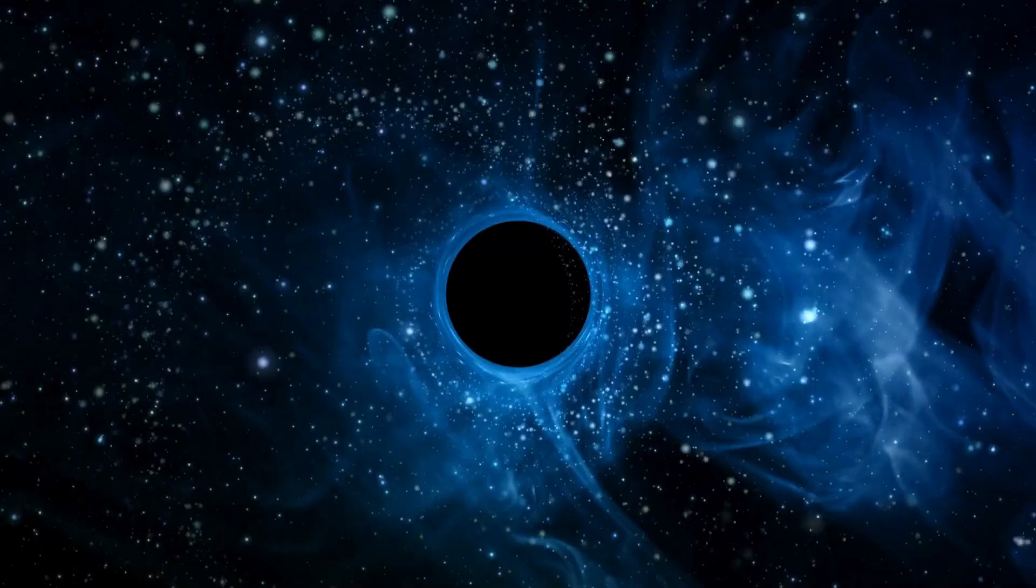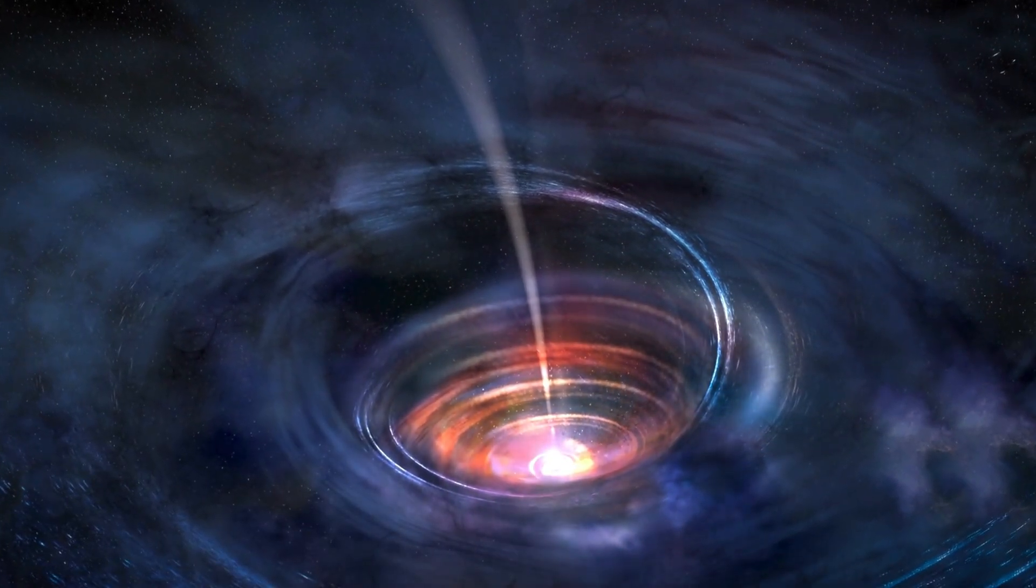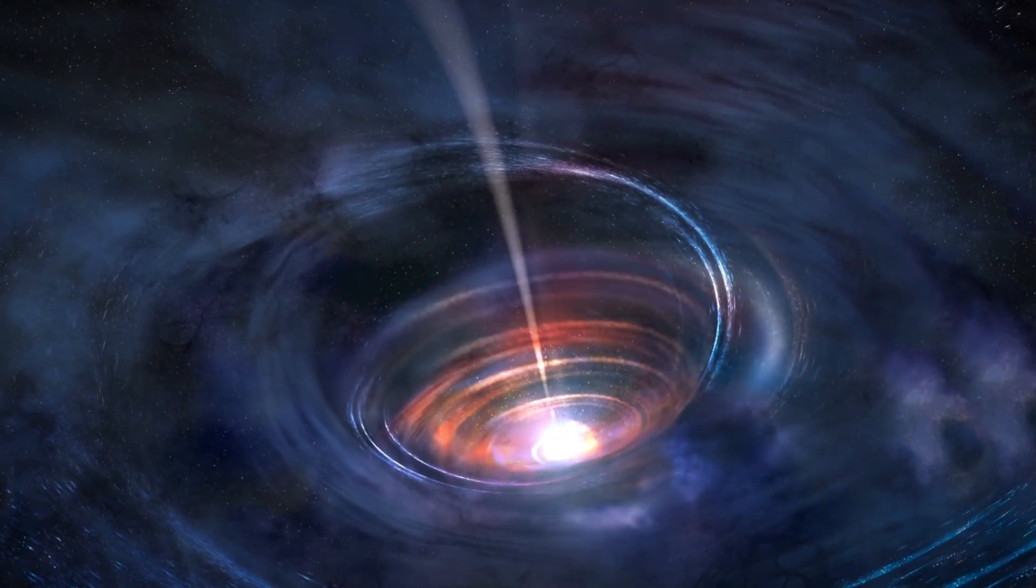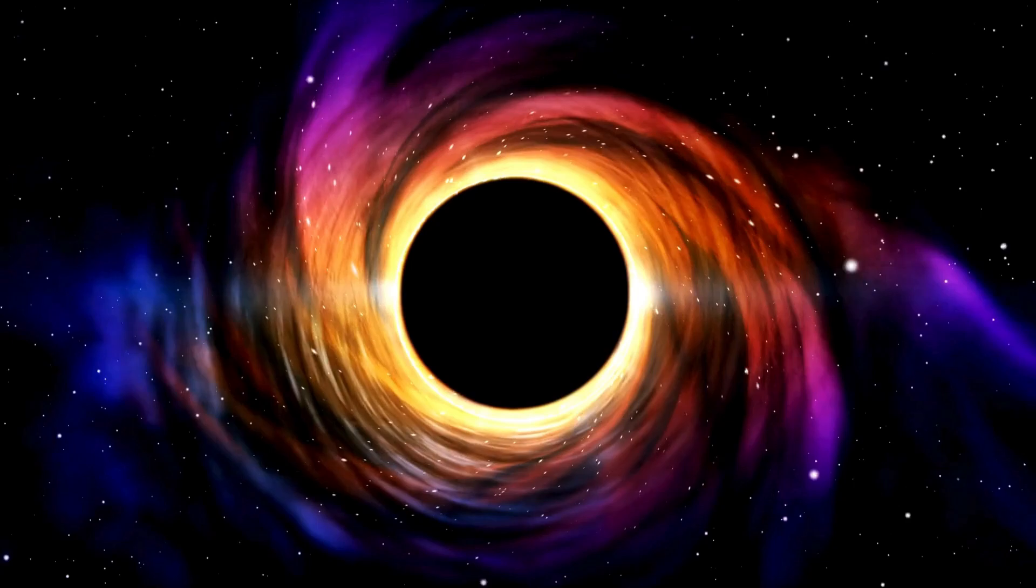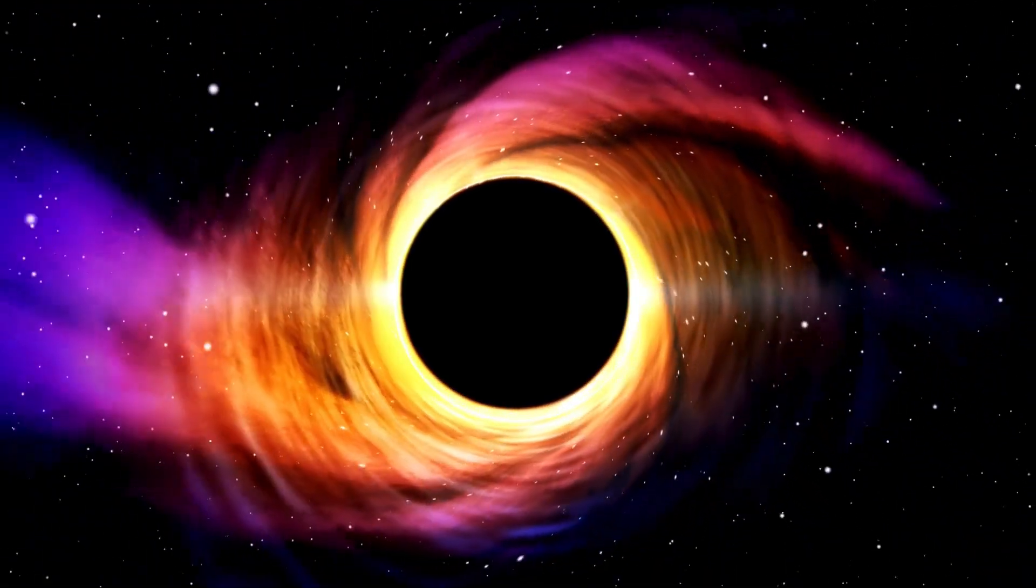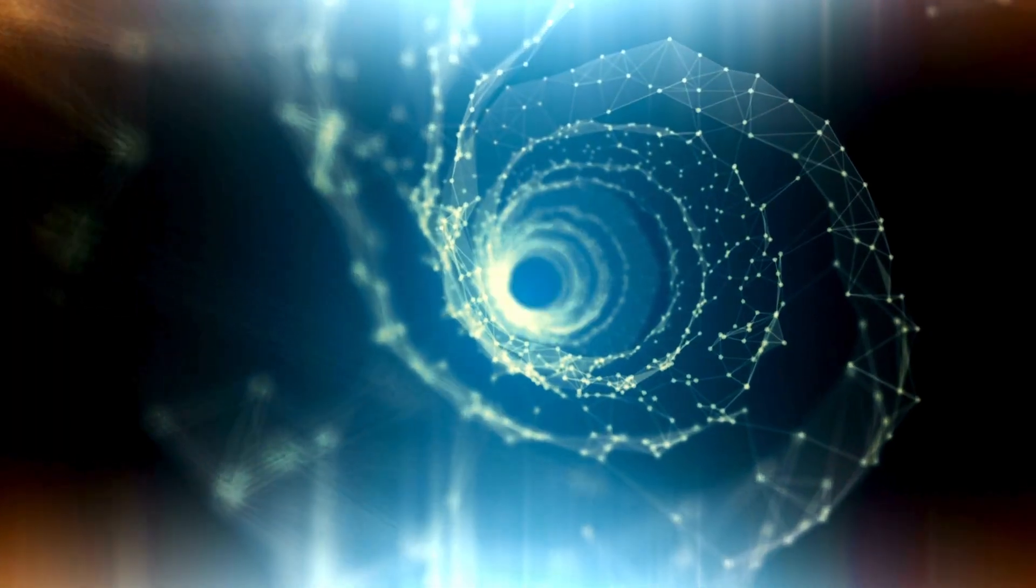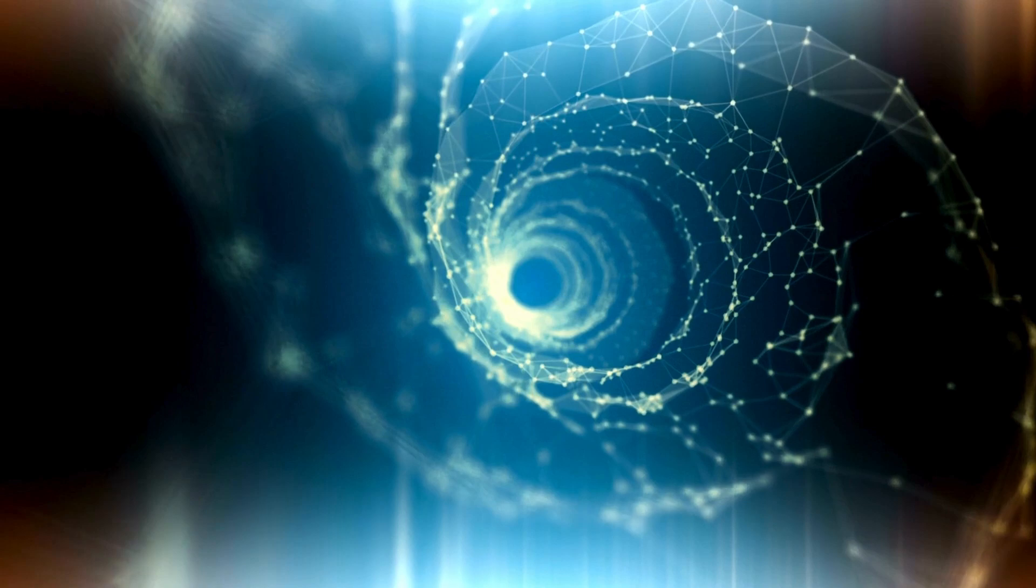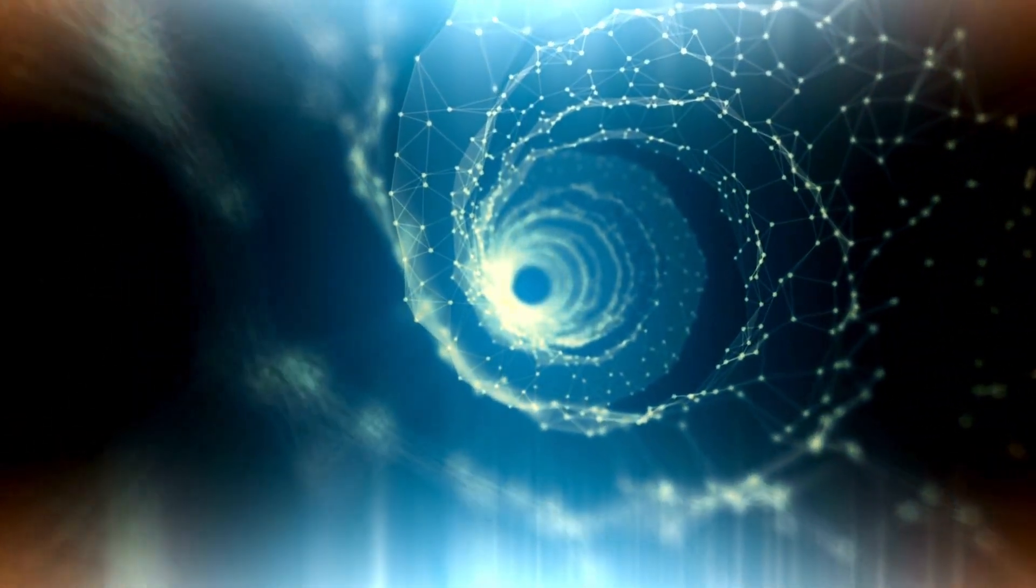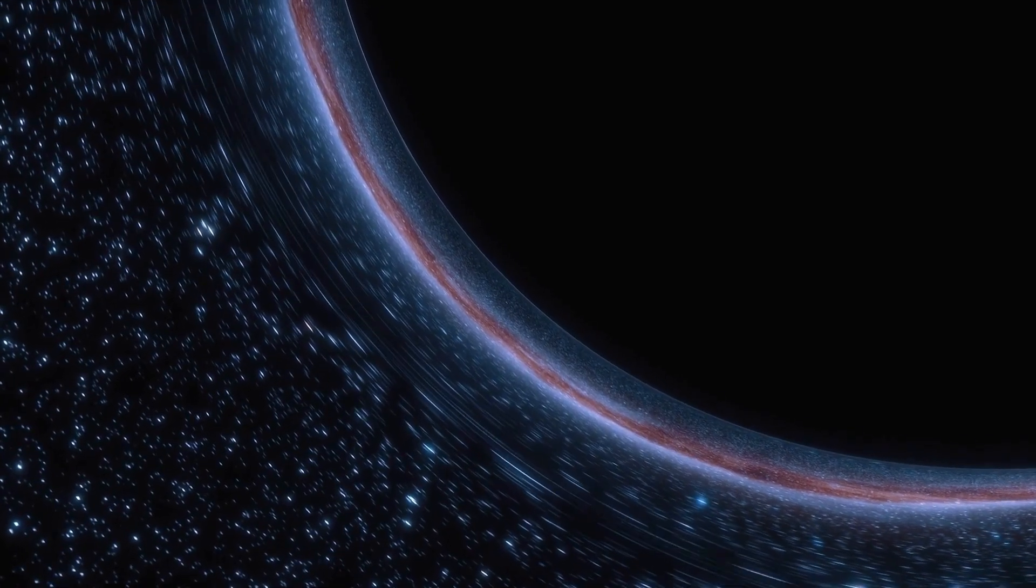As these massive stars collapse, something strange happens near their surfaces: time itself begins to play tricks. From the perspective of someone far away, time seems to slow down near the event horizon, the point of no return for anything falling into a black hole. It's as if the star's clock ticks at a different speed compared to our own. Sometimes, when two smaller black holes collide, they merge to form an even larger and more terrifying black hole. If a black hole interacts with a neutron star, they create a monstrous nightmare that defies comprehension.